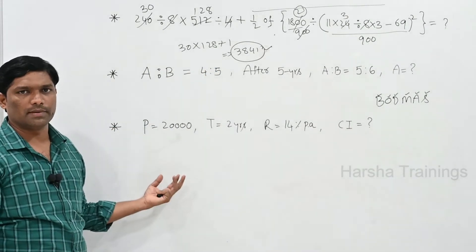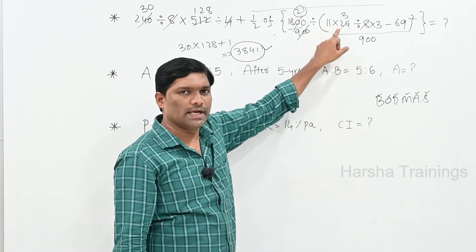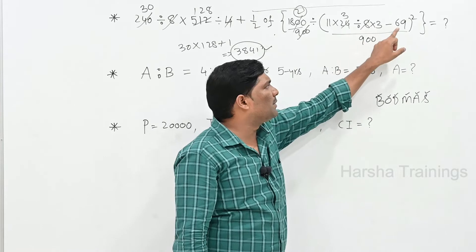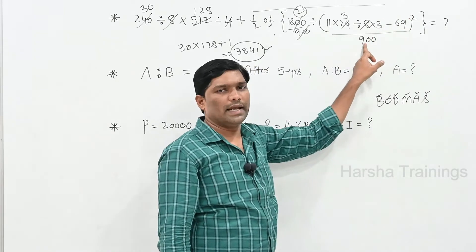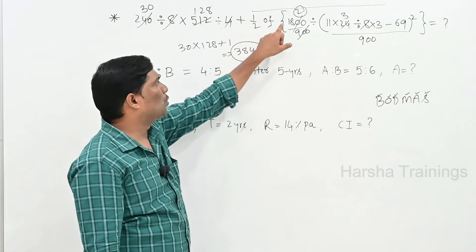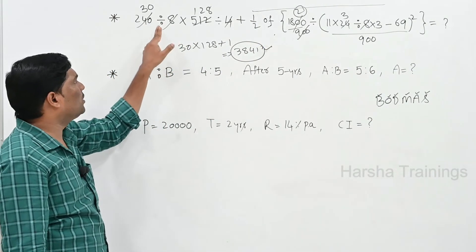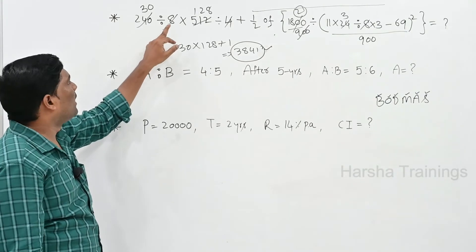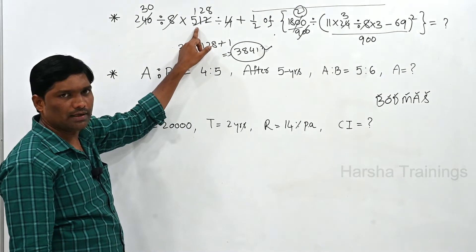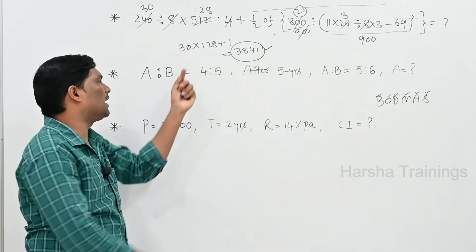Quick recap: first preference Division — 8 threes are 24, 11 threes are 33, 33 into 3 is 99, 99 minus 69 is 30, 30 squared is 900, 1800 divided by 900 is 2. Next, half of half: two twos cancel. Remaining part: 240 divided by 8 is 30, 512 divided by 4 is 128. Final answer: 30 into 128 plus 1 equals 3841.